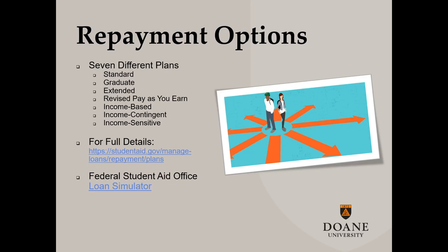Now that you know where to locate information about your loans, maybe you're wondering how to start repaying them and what options you have. There are up to seven different plans available to students and each one has different features. Some plans are fixed and set for a certain length of time, others are defined by how much discretionary income you make, and others gradually increase the payments every couple of years. It is important to find what option is best for your particular financial situation. If you are unsure, the Federal Student Aid Office offers a loan simulator — a series of guided questions to help you figure out which repayment strategy is best for you.